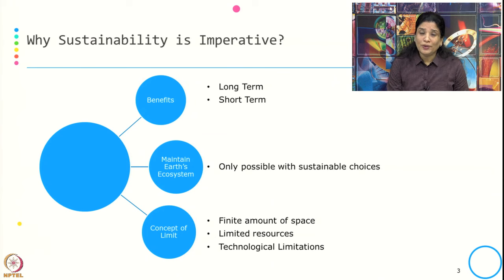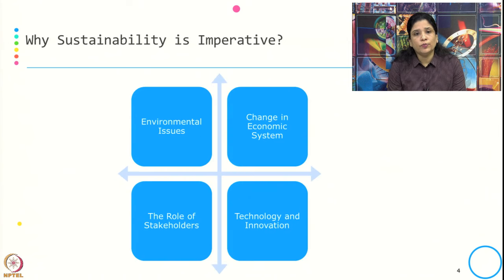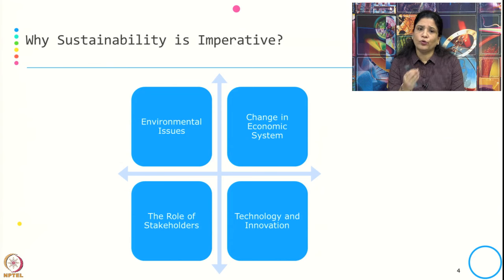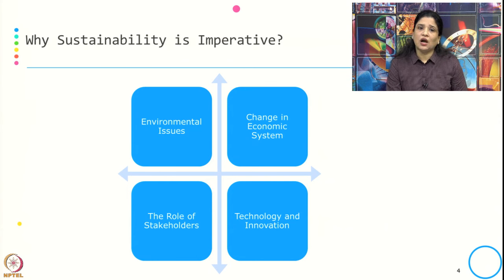The third point is that to maintain the earth's ecosystem, the only possibility left is to make sustainable choices — in our production and consumption. There are many views, opinions, and studies on why sustainability is imperative. In this session, we have categorized the key points into four broad clusters: environmental issues, change in the economic system, the role of stakeholders, and technology and innovation. We will now explore how environmental issues make sustainability imperative.